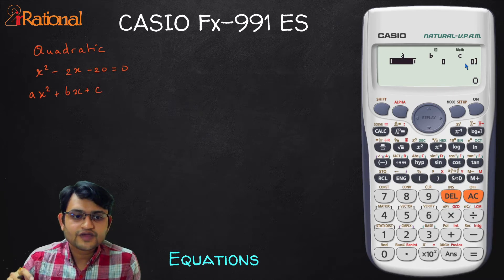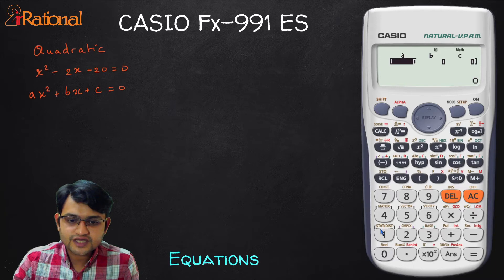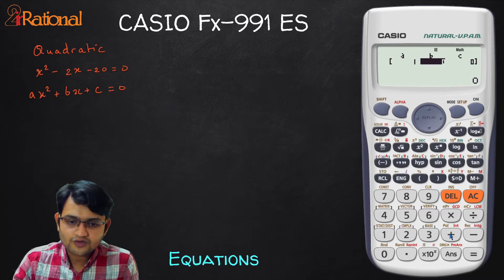So accordingly we can figure out what is our value of A, B and C. So in this case our value of A is 1. So I will press 1 and equal to it goes to B, value of B is minus 2 and value of C is minus 20.